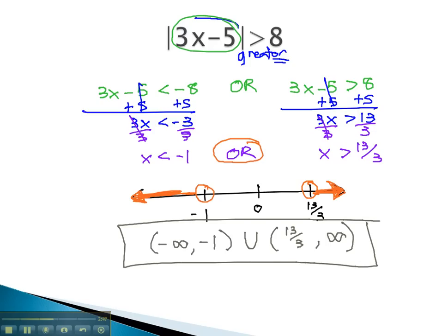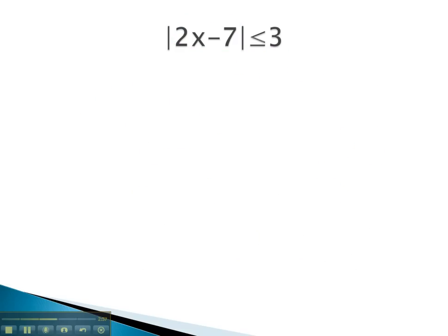Let's take a look at one more example, so we can decide how to set up our compound inequality and how to isolate our variables. In this problem, we see that the absolute value is less than a number. When the absolute value is less than a number, we know we must set up a tripartite inequality.